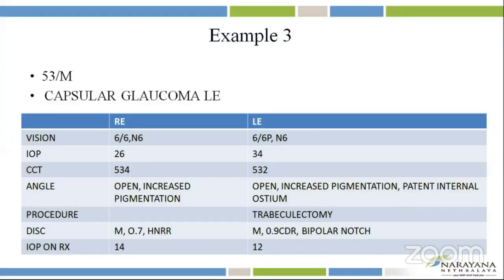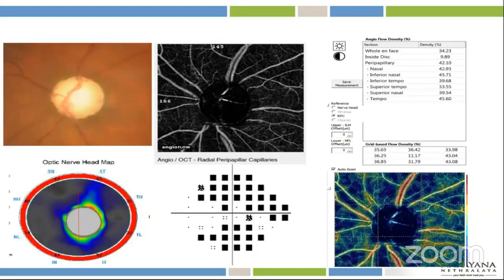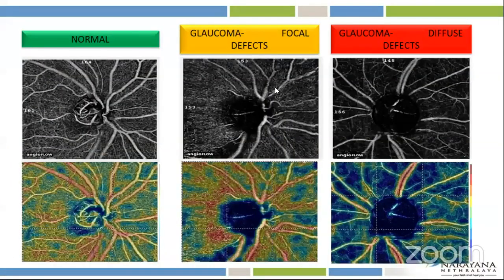Example three was a 53-year-old patient with capsular pseudoexfoliation glaucoma in the left eye with IOP of 34. The angles were open and a trabeculectomy had been done. This showed a medium-sized disc with a 0.9 cup-to-disc ratio with a bipolar notch. It showed advanced glaucoma on the visual field, RNFL thinning, and a decrease in vessel density.